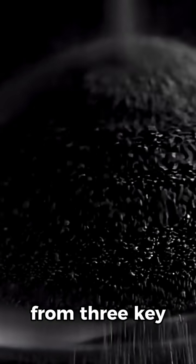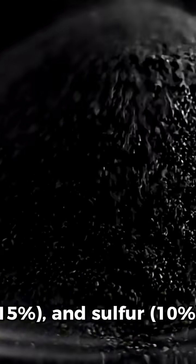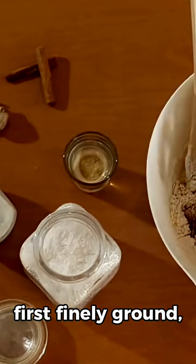Black powder is made from three key ingredients: potassium nitrate 75%, charcoal 15%, and sulfur 10%. These ingredients are first finely ground.